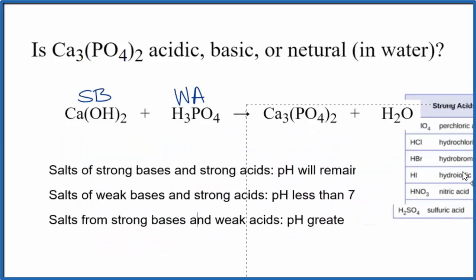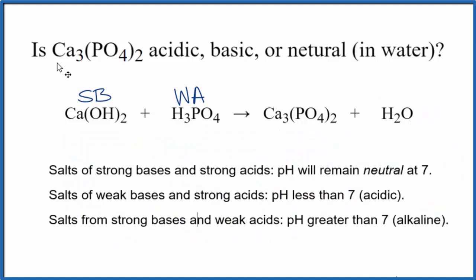So now we know the strength of the acid and the base, we can use the rules to figure out whether Ca₃(PO₄)₂ is acidic, basic, or neutral when it's dissolved in water. So we're looking for strong base, weak acid. Here's a strong base and a weak acid.